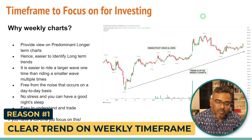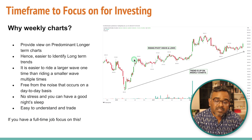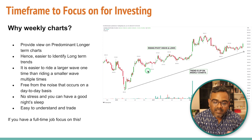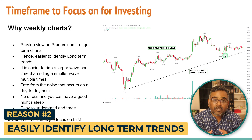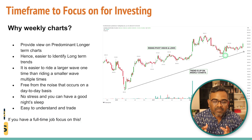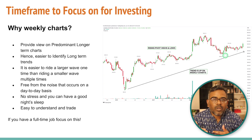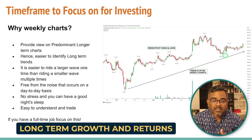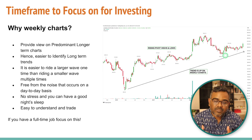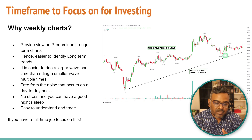The predominant long-term trends are very clear. For example, I have a chart of Shardha Crop here and you can clearly see that this stock is in a long-term uptrend — it's been going clearly higher and higher. The pivot highs have been rising and the pivot lows have also been rising. So overall, if you look at a weekly chart you can clearly see what the predominant long-term uptrend or downtrend is. That's why you should look at weekly charts as an investor, since you're looking at long-term growth over three to five years.